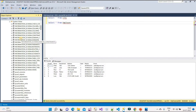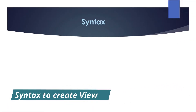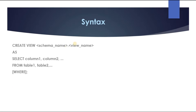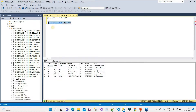Now let's understand the syntax to create a view. It is very simple: we write CREATE VIEW, then optionally provide a schema name, then the view name which is mandatory, then AS, then our SELECT query specifying the columns we want. We can select from multiple tables if needed, and include a WHERE condition if required. If there's no WHERE condition, it is not necessary.